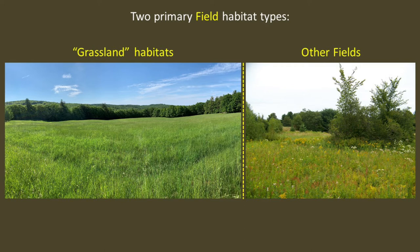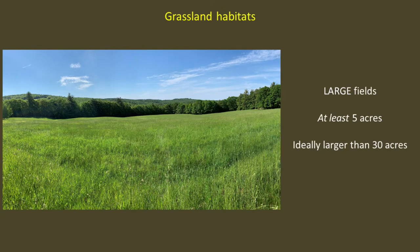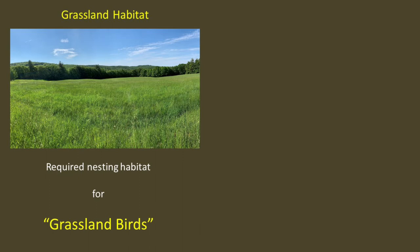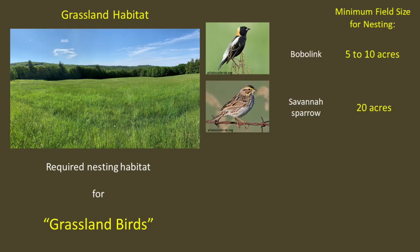I'll first discuss the grassland habitats. Think of grassland habitats as large fields — fields that are at least five acres, but ideally greater than 30 acres in size. These large fields are required nesting habitat for a small number of grassland dependent birds that we refer to simply as the grassland birds. Populations of these birds are declining dramatically throughout their range, but especially here in New England, primarily as a result of habitat loss. The two grassland bird species most likely to occur on lands owned by private landowners or communities are the bobolink and the savannah sparrow.